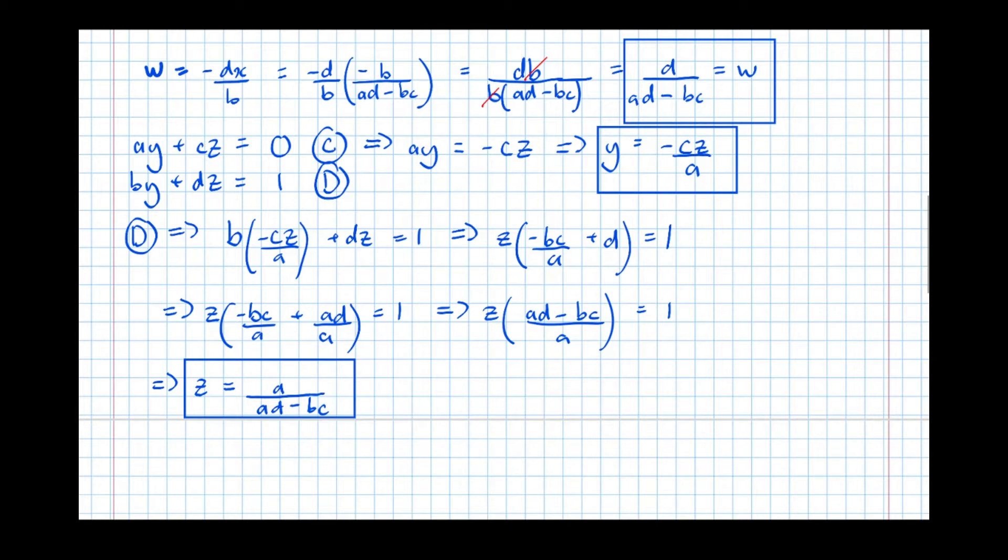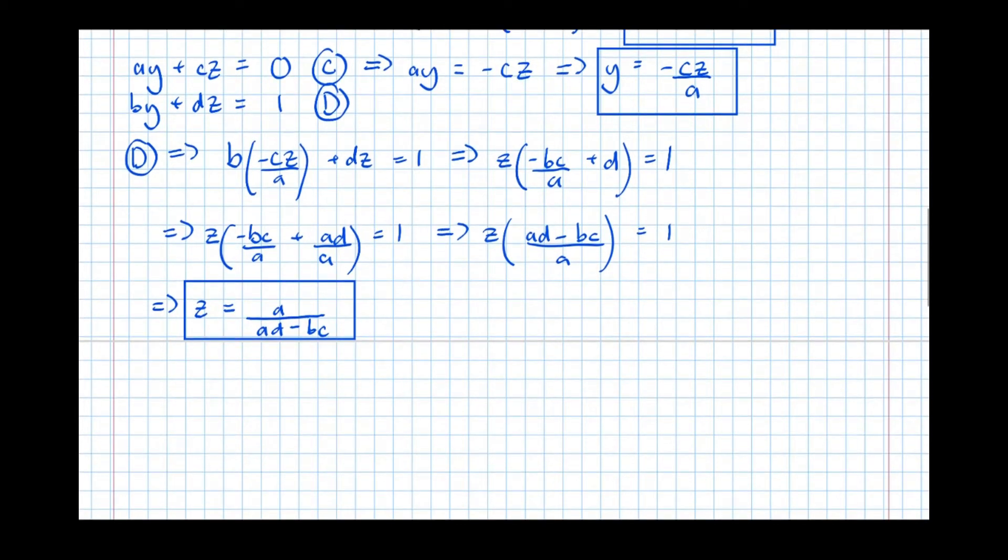We're now going to sub this expression for Z into our expression for Y. So we can see there at the top of the screen, Y is minus CZ over A. So we've got Y equals minus C over A, we'll keep it at the front, times Z, which is A over AD minus BC.